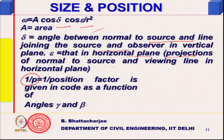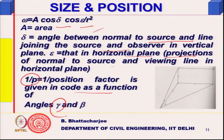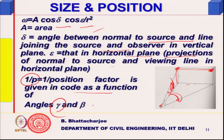Position factor P is given in code as a function of gamma and beta. Beta is in the horizontal plane and gamma is in the vertical plane. The lamp and object make these two angles with respect to your eye — gamma in the vertical plane and beta in the horizontal plane.